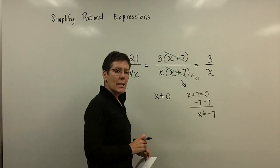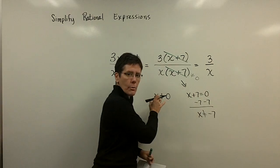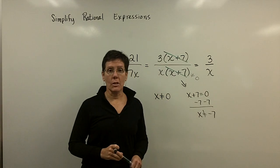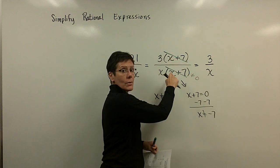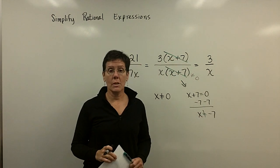But I want to make sure that denominator is not equal to zero. So these two values are restrictions on the domain of the original function. Just because I cross these out doesn't mean that x is equal to a negative 7 is not a restriction, so be careful there.